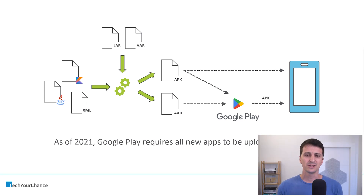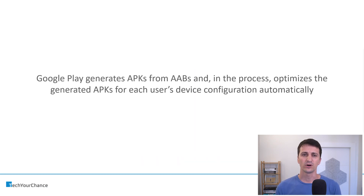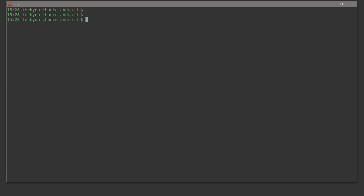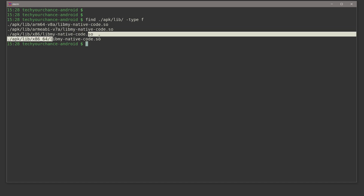Why do we need AABs? We used APKs for years — they're simpler and more versatile. The reason for the AAB format is that Google Play generates APKs from the archive, and in the process automatically optimizes those APKs for specific device configurations. Let me show you with one example. Back in the project: inside my APK, inside the lib folder, I had four different implementations of my native library — something written using C or C++ — corresponding to different CPU architectures.